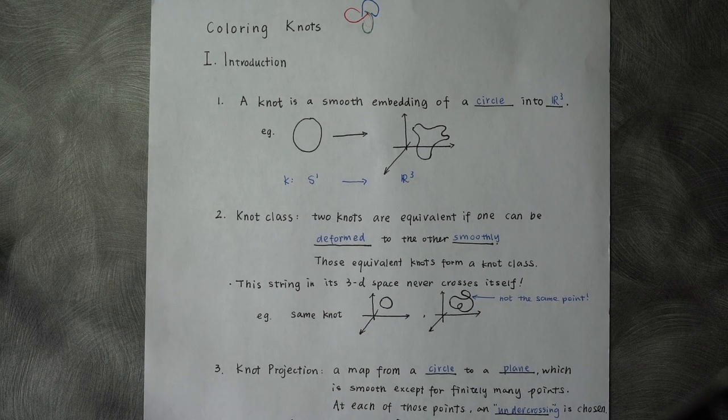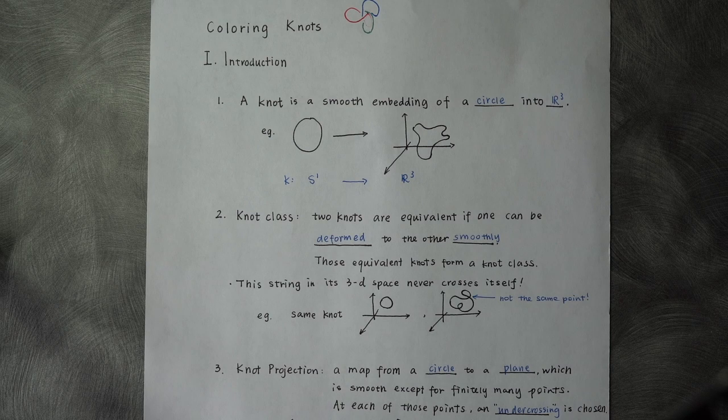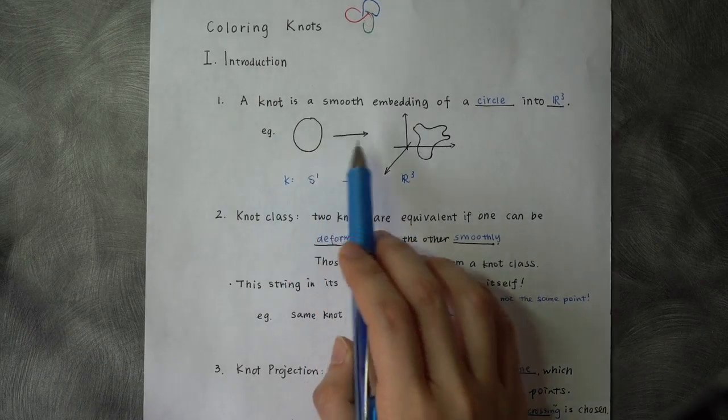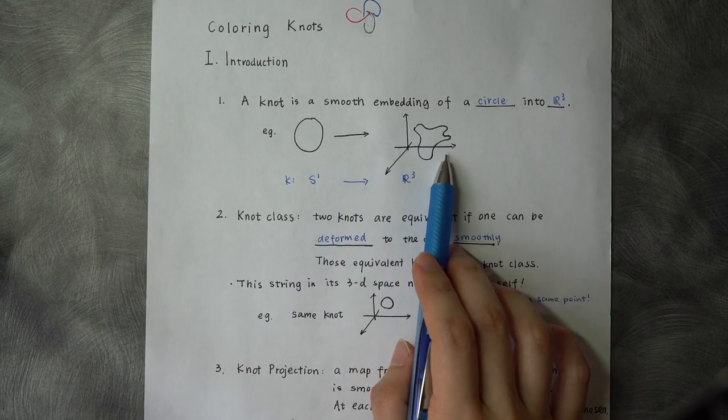A knot is a smooth embedding of a circle into R3 space. That is saying, if we have a circle here, we can embed it to this R3 space.